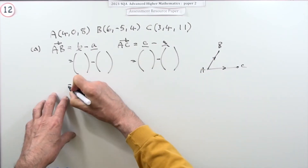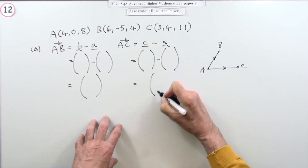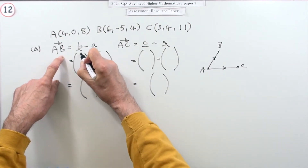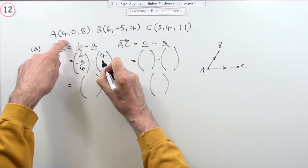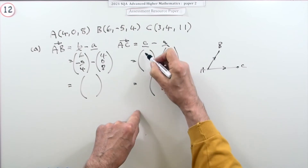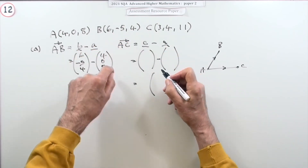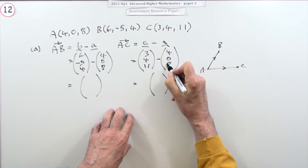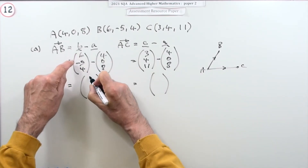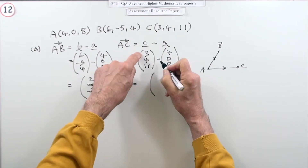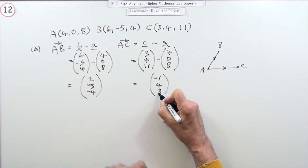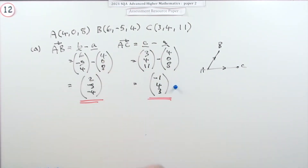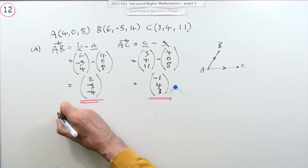There's a lot of replication of figures throughout part a. AB = (2, -5, -4) and AC = (-1, 4, 3). After subtracting: 6 - 4 = 2, -5 - 0 = -5, 4 - 8 = -4, and 3 - 4 = -1, 4 - 0 = 4, 11 - 8 = 3. Completing that calculation earns a mark. Now we need the normal vector.